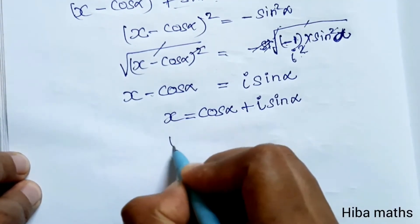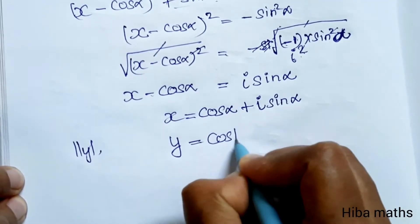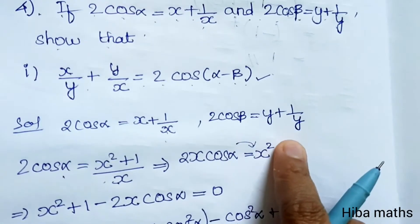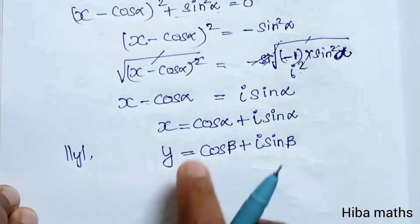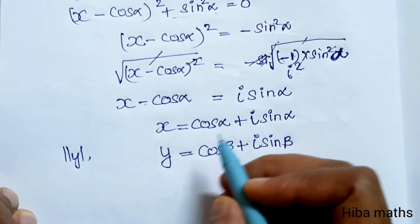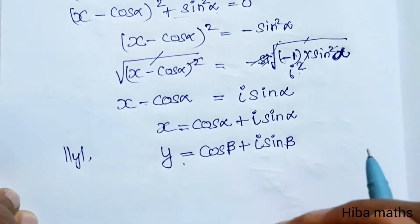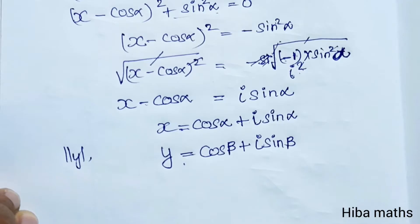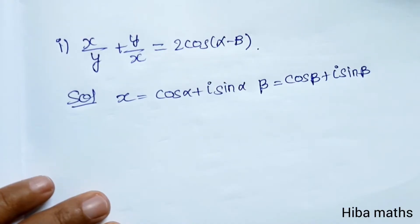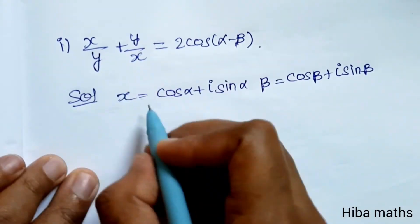So x equals cosα + i sinα. Similarly, following the same procedure, y equals cosβ + i sinβ. Now we substitute these x and y values to solve subdivision 1: x/y + y/x equals 2cos(α - β).